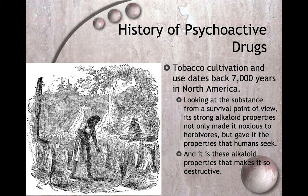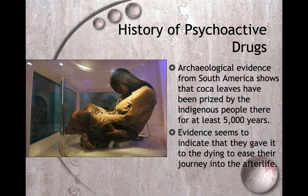Tobacco cultivation and use dates back 7,000 years in North America. Its strong alkaloid properties not only made it noxious to herbivores like deer that wanted to eat the plant, but gave humans the properties they were seeking. Archaeological evidence from South America shows that coca leaves have been prized by indigenous people there for at least 5,000 years. Evidence seems to indicate they gave coca to the dying to ease their journey into the afterlife.